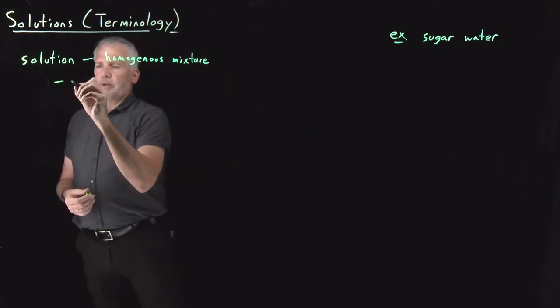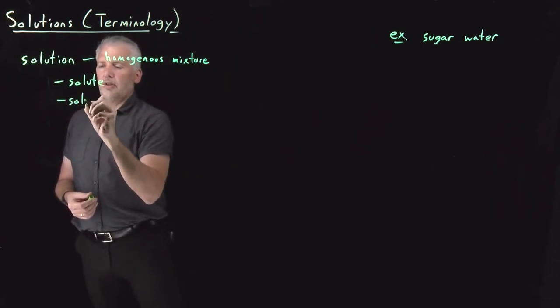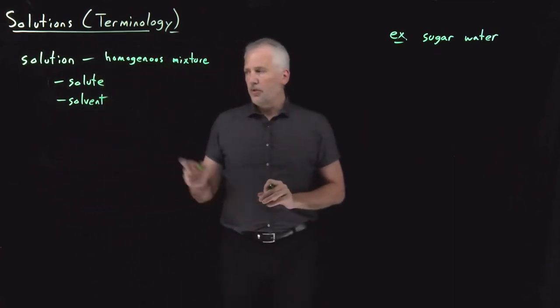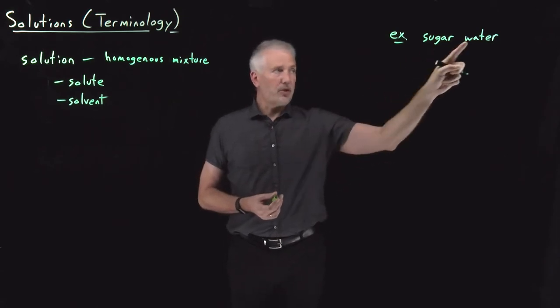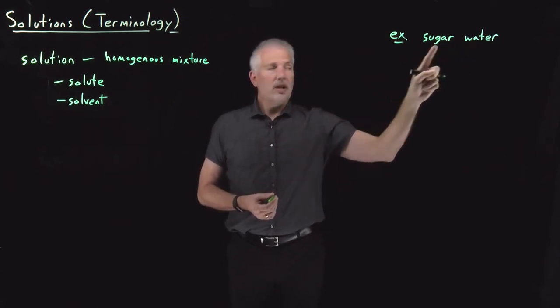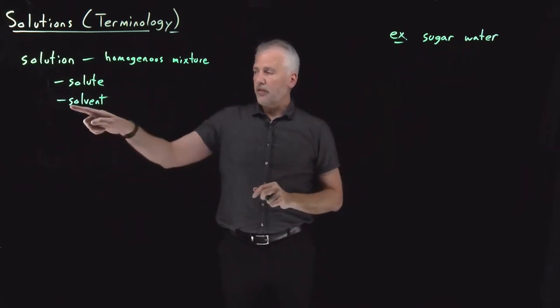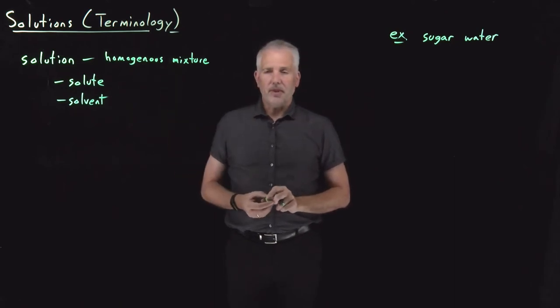We often talk about solutions in terms of solutes and solvents. The solute is usually considered to be the minority component. If I dissolve a small amount of sugar in a larger amount of water, we say that the sugar is the solute, the water is the solvent. The solvent is the background into which I'm dissolving the solute to make this homogeneous mixture that I'm calling a solution.